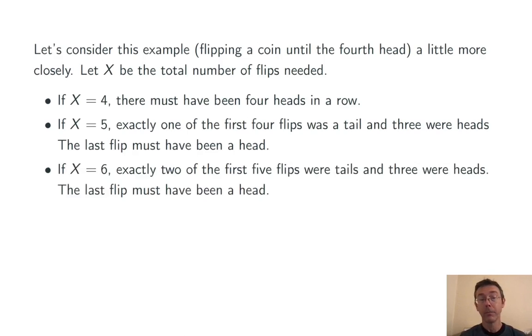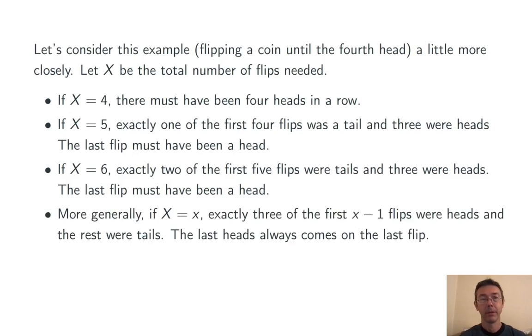Similarly, if x is 6, then exactly two of the first five flips were tails, and the other three were heads. The last flip, again, was a head. More generally, if we had x flips, then three of the first x minus 1 flips were heads, and the rest were tails. Again, the last head comes on the last flip.